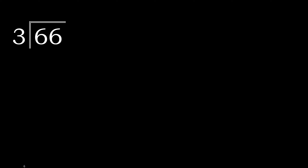66 divided by 3. 6 is not less, therefore 6. 3 multiplied by which number is nearest to 6 but not greater? 3 multiplied by 3 is 9 — 9 is greater. 3 multiplied by 2 is 6.